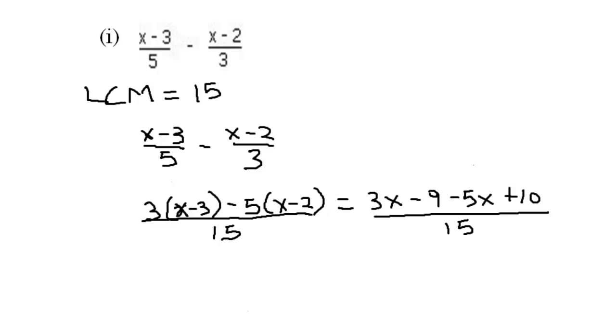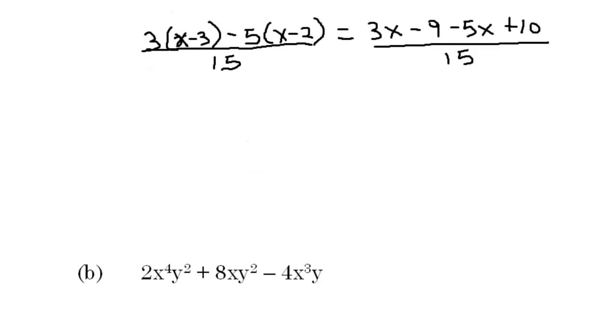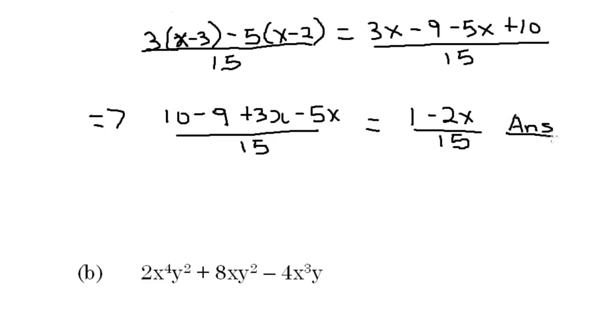Now let's simplify the numerator. Let's write like terms together. We're going to put all the like terms together. So that is 10 minus 9, plus 3x minus 5x, all over 15. That is going to be equal to 10 minus 9, that is 1. 3x minus 5x, that is minus 2x, over 15. And that's our solution. 1 minus 2x over 15 is the solution.